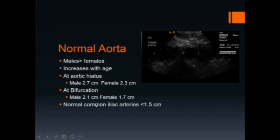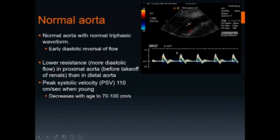The normal common iliac artery should be less than 1.5 cm in size. This image shows the appropriate way to measure the aorta in the transverse plane. The Doppler waveform of the normal aorta is triphasic with early diastolic reversal of flow. Lower resistance, i.e. more diastolic flow, is seen in the proximal aorta before the takeoff of the renal arteries than in the distal aorta. Peak systolic velocity in the normal aorta is 110 cm per second when young, decreasing to 70–100 cm per second with increasing age.